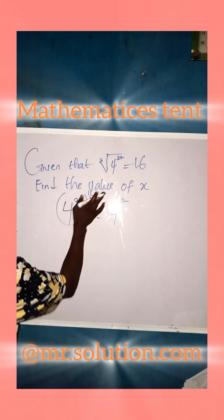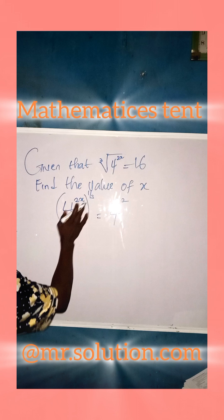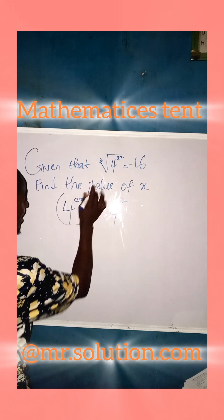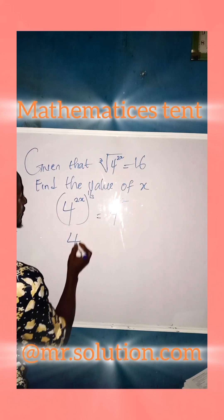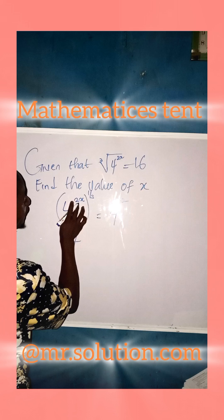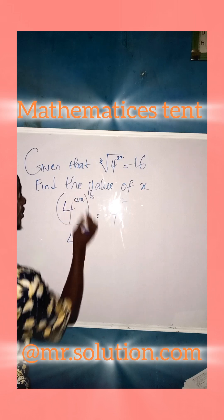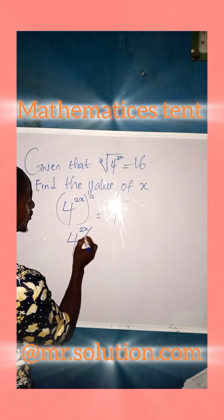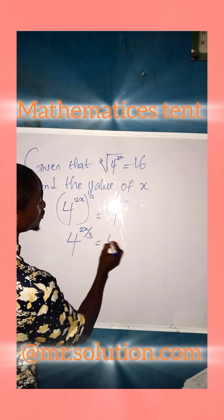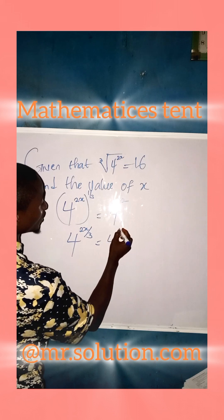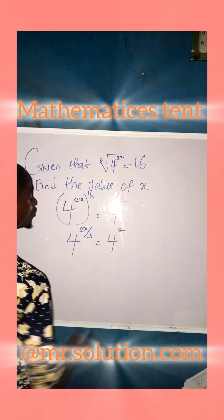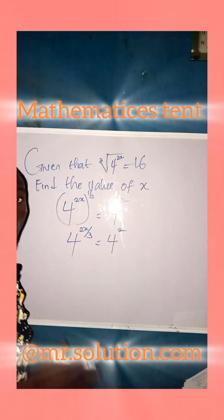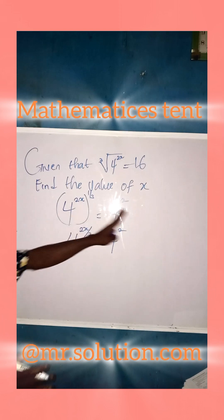Now let us open these powers. According to the law of indices, we multiply. We are going to have 4 raised to the power of 2x times 1 over 3, which gives us 2x all over 3, equals 4 raised to the power of 2. So now we have the same base on both sides.